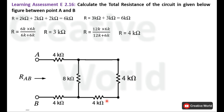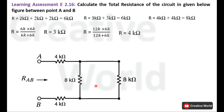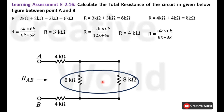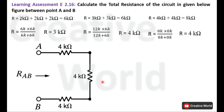These two 4 Kilo Ohm resistances are in a series connection, so their cumulative value is 8 Kilo Ohm. We replace them with a single 8 Kilo Ohm resistance. Now, these two 8 Kilo Ohm resistances are connected in parallel. Their equivalent resistance — product divided by sum — is 4 Kilo Ohm. We modify the circuit by replacing these two 8 Kilo Ohm resistances with a single 4 Kilo Ohm resistance.